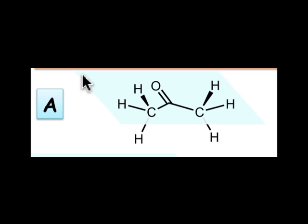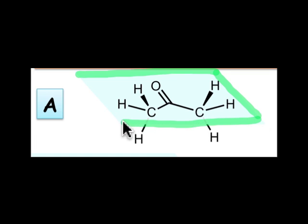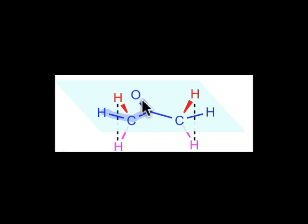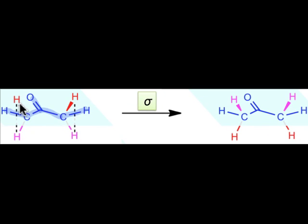Let's define the operation by the plane that I'm outlining here. The reflection operation, or σ as it's sometimes called, projects each atom onto the plane, followed by movement through the plane to a distance equal to the original projection distance. Any atom that begins in the plane, like the blue atoms outlined here, are already part of the projection and don't have to move. Atoms that are above the plane, like the red atoms, move below the plane to an equidistant position upon application of the reflection operation.